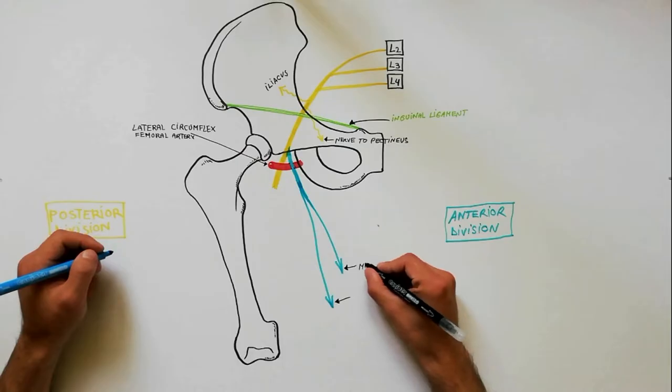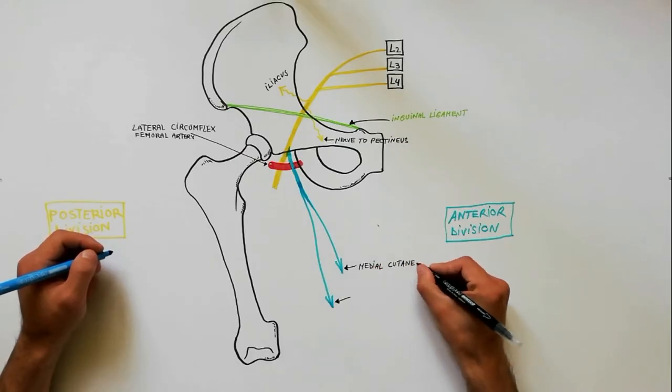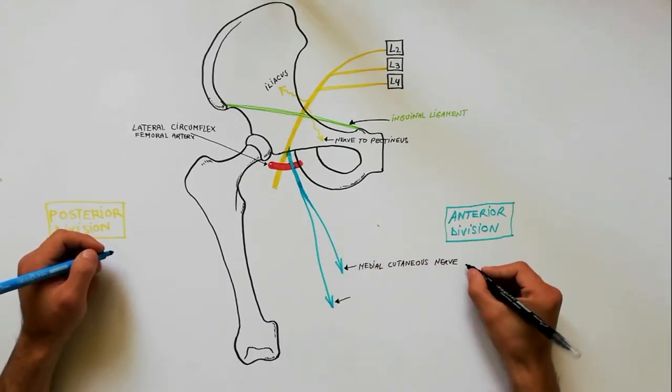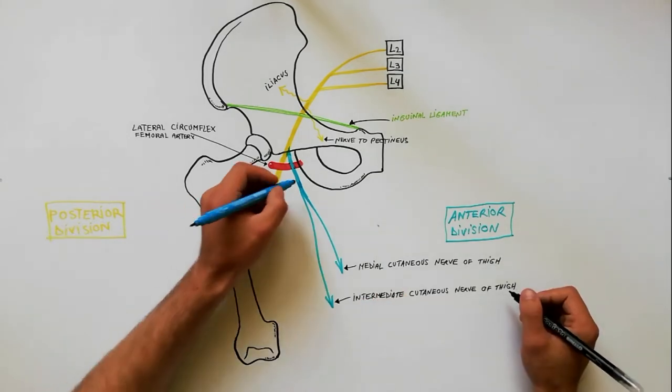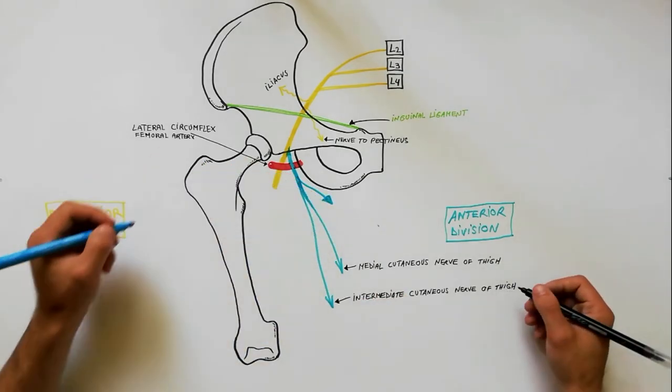The cutaneous nerves are medial cutaneous nerve of the thigh and intermediate cutaneous nerve of the thigh. The muscular branch supplies the sartorius.